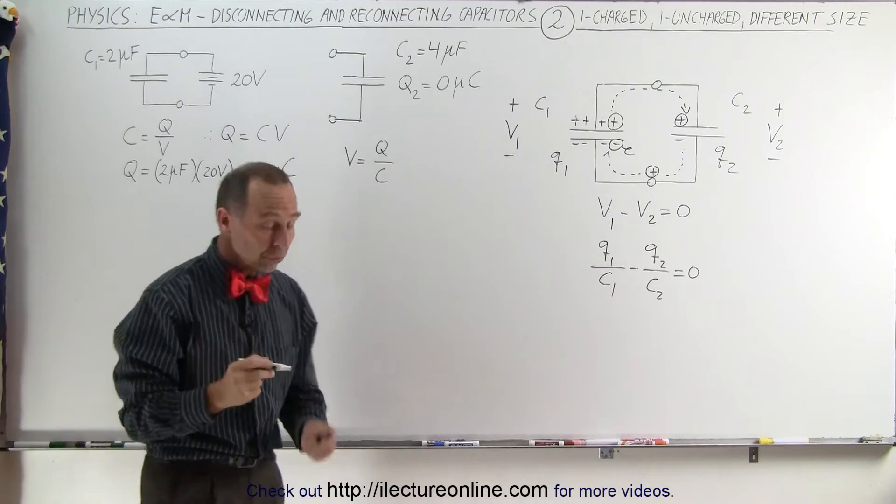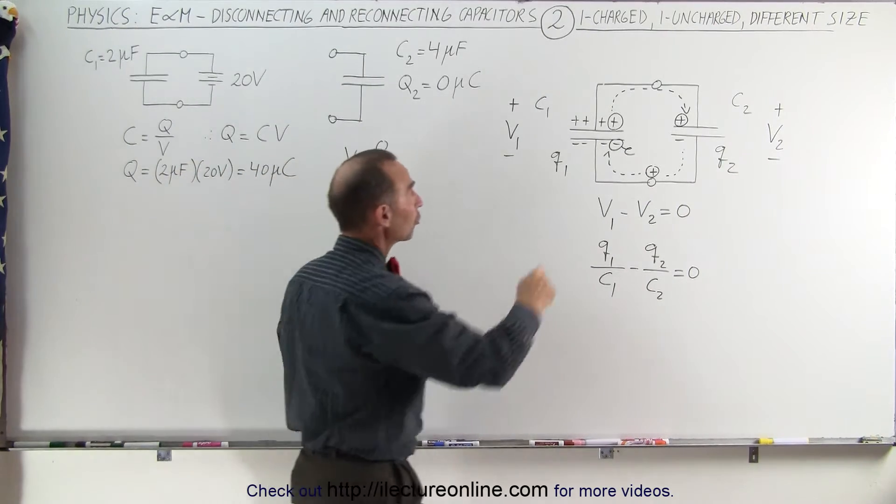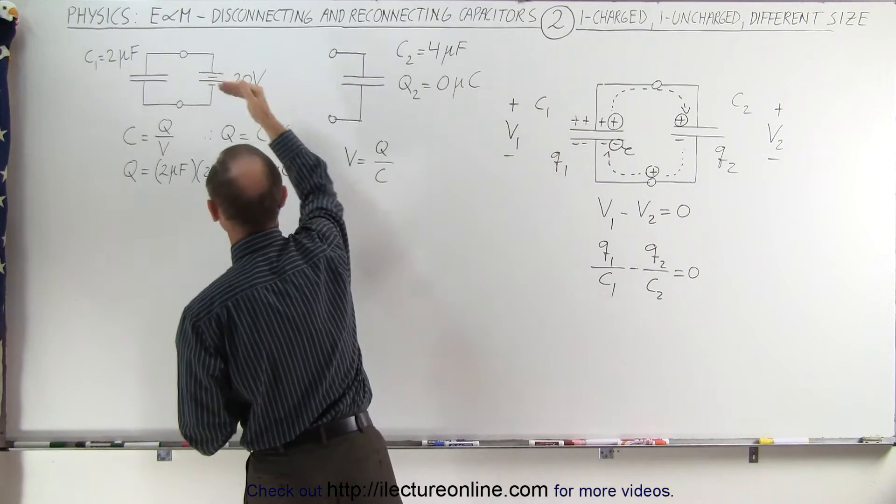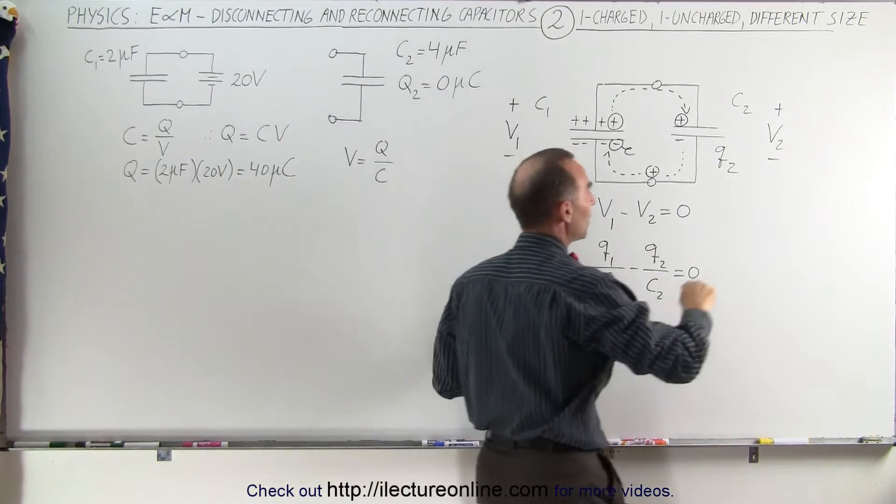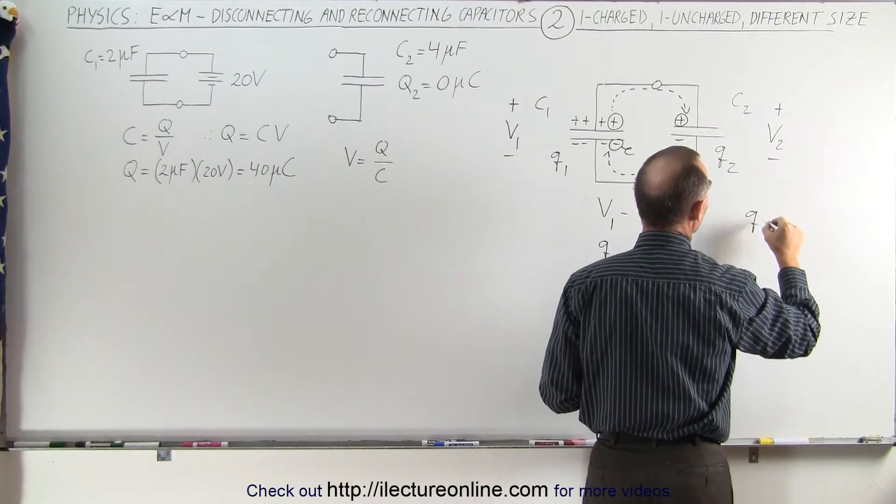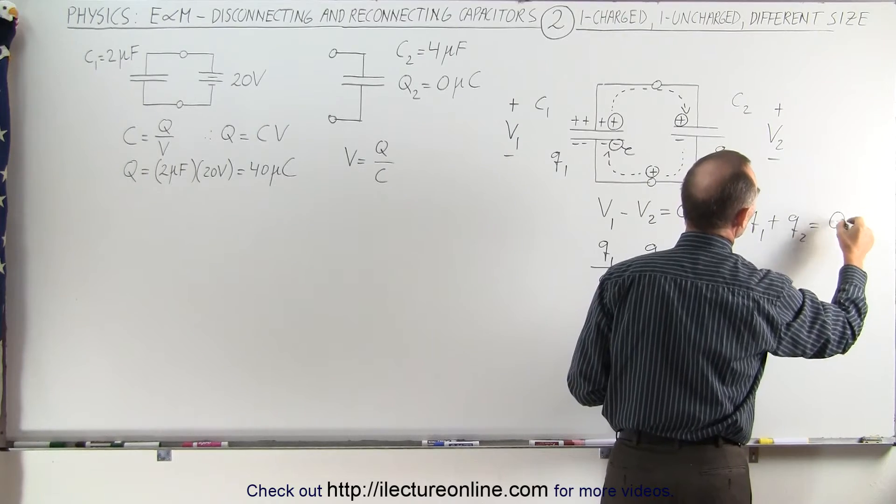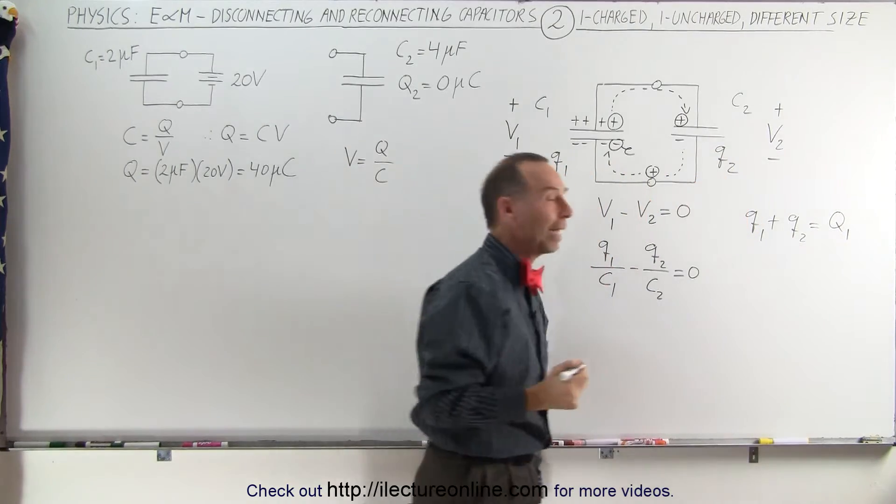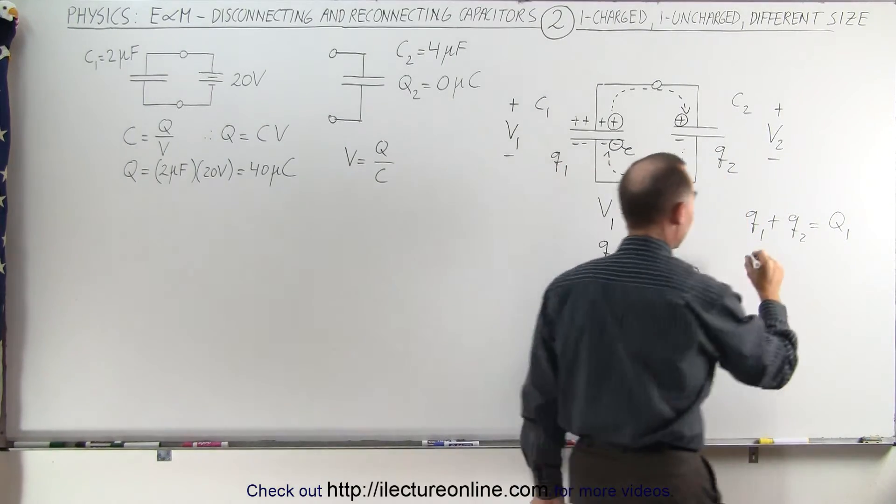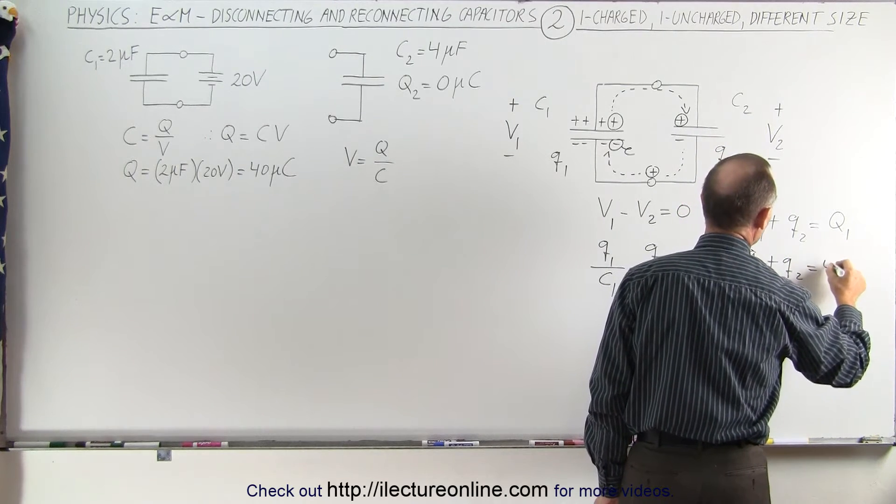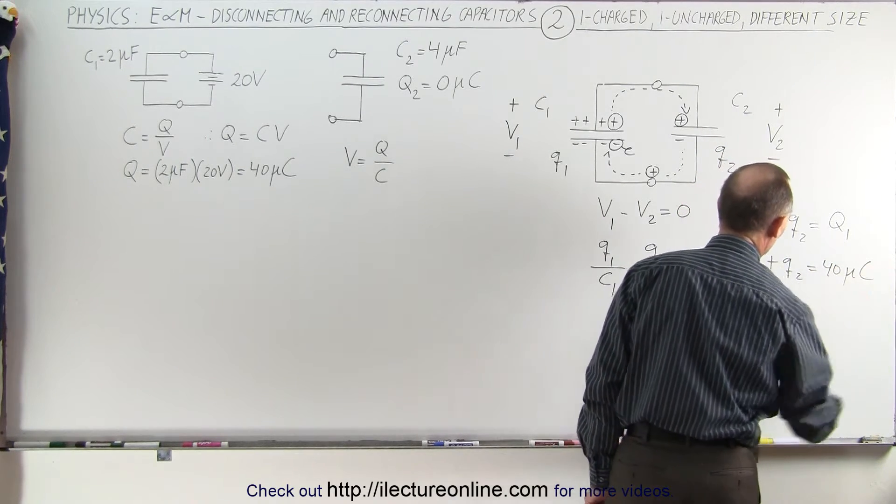What we can also say is that the total charge on the two capacitors must still equal the total initial charge you had, the 40 micro coulombs, which means that Q1 plus Q2 is going to be equal to the initial charge you had on capacitor one. And we can say that Q1 plus Q2 is therefore going to be equal to 40 micro coulombs.